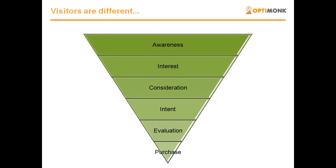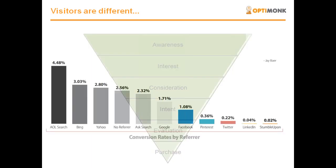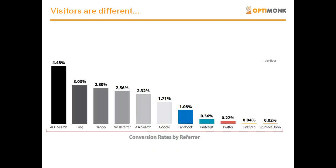Some of them are only aware of a problem, while others are already considering buying a solution, while others may be already evaluating solutions. And that's why search-related channels, like Google, Bing, or Yahoo, are usually converting much better than display types, like display ads or social media, since those who are already actively searching for a term or a product are usually in a much more advanced stage of their own buying process.